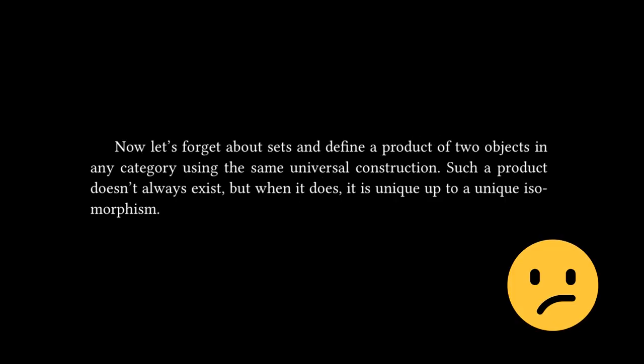Shortly after this, one of the statements says: Now let's forget about sets and define product of two objects in any category using the same universal construction. Such a product doesn't always exist, but when it does, it is unique up to unique isomorphism. I was pretty confused by this statement. This chapter in general is by far the most difficult to parse compared to the previous four.